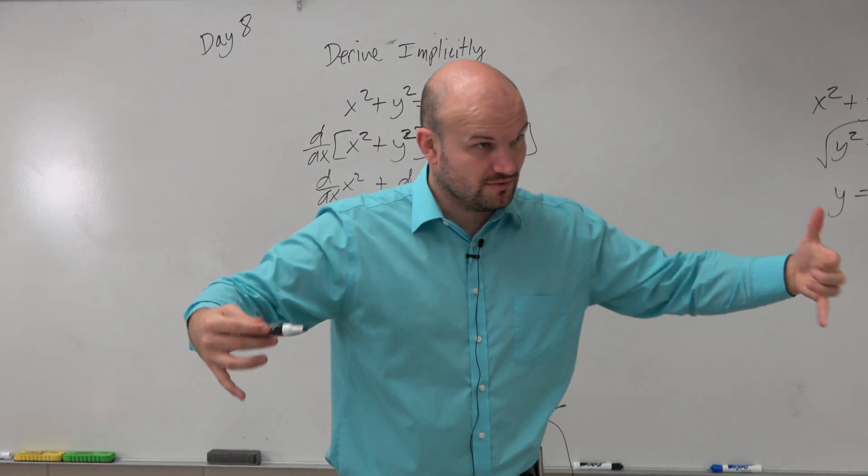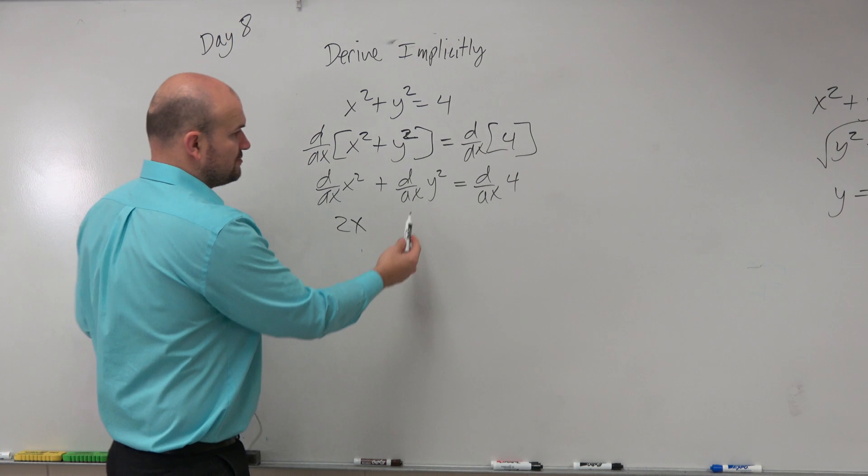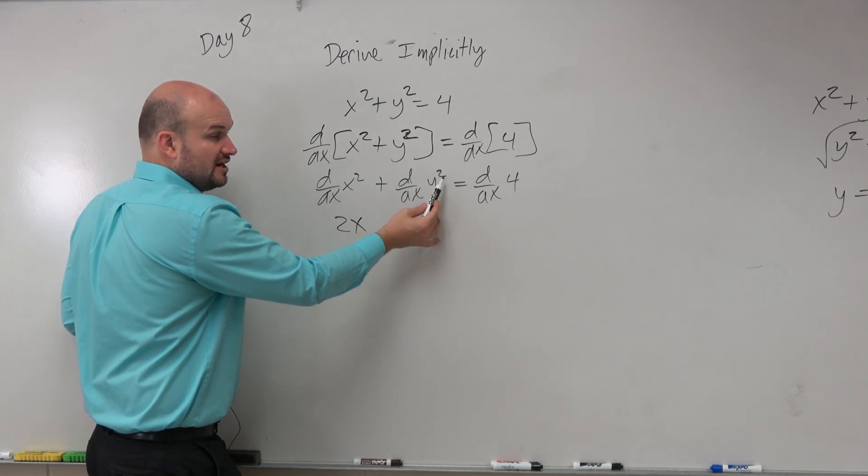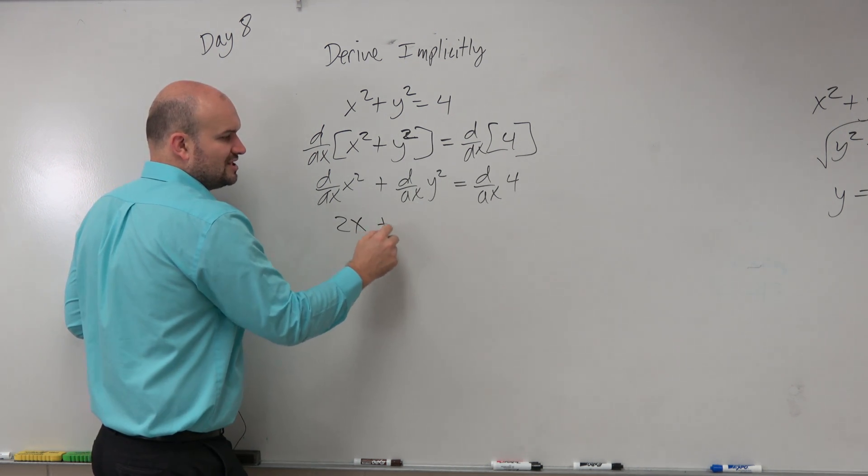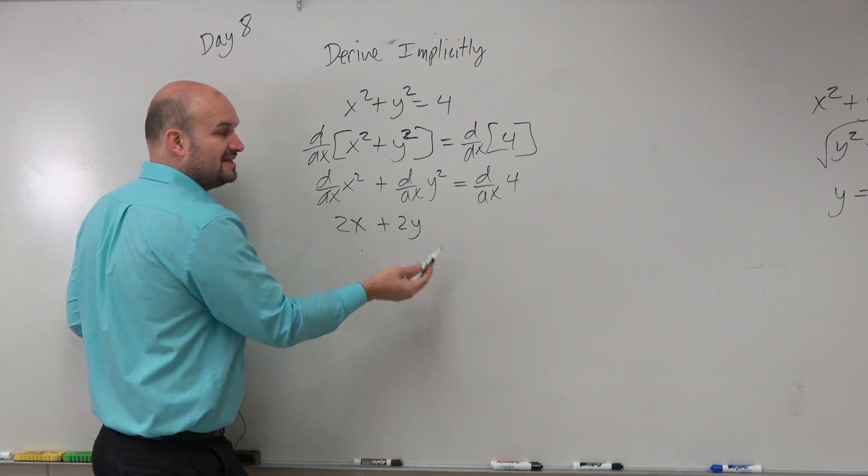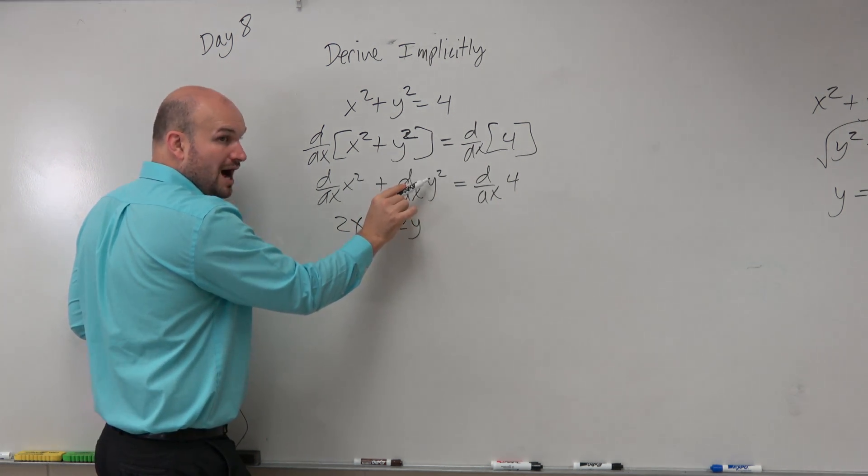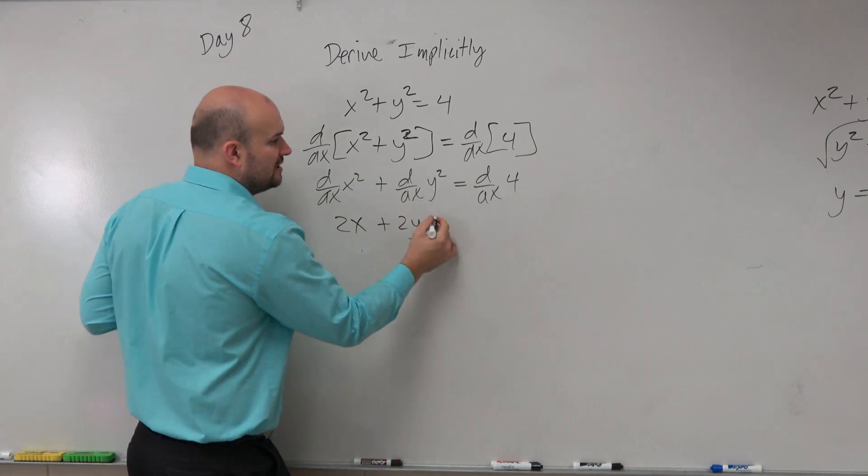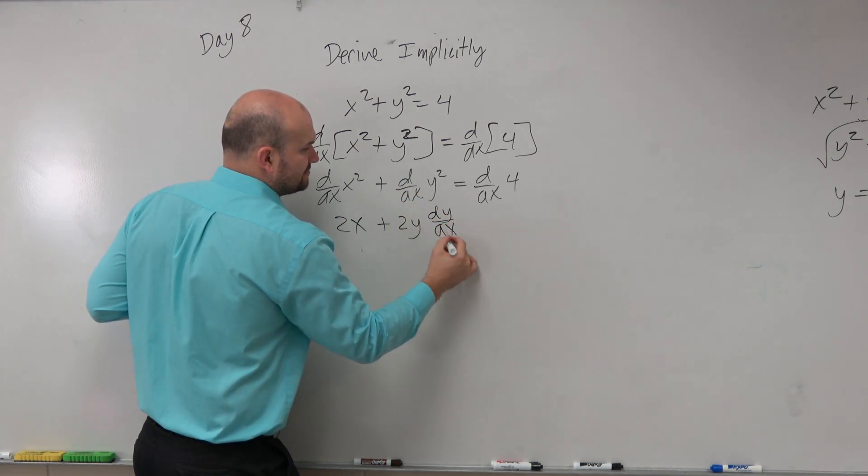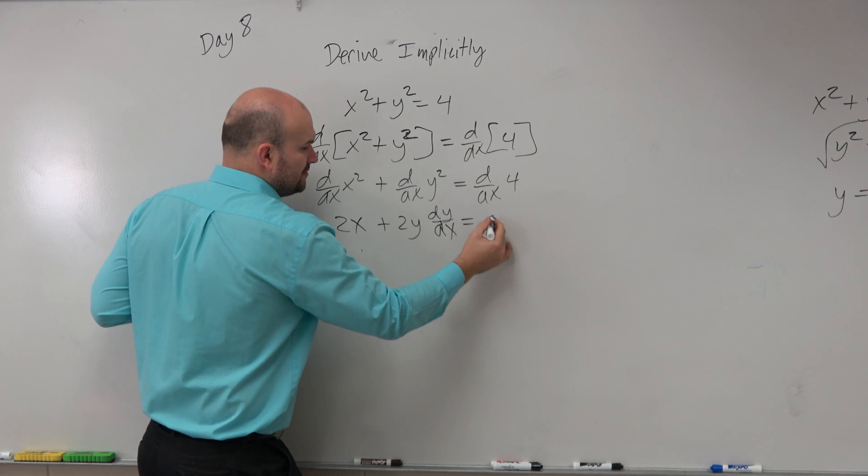But remember, what we've already learned here is when we're taking the derivative of another variable with respect to x, we just take the derivative, but then we have to use the chain rule. So it's 2y and then d over dx of y, which is the inside function here, is dy dx. And that's going to equal 0.